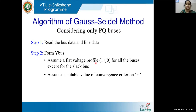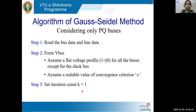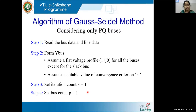In step two also: initialize all PQ bus voltages as the flat voltage profile, 1 + j0. Set your convergence criteria epsilon — whether 0.1, 0.001, or 0.01 depending on system requirements. Step three: set iteration count k = 1. In one iteration you must handle all buses, so after setting the iteration count, set the bus count.